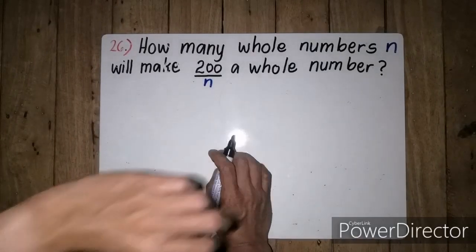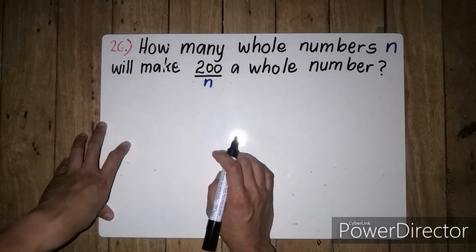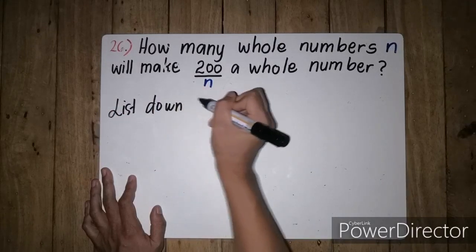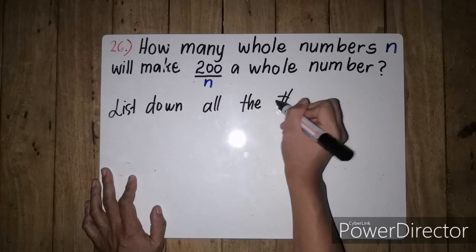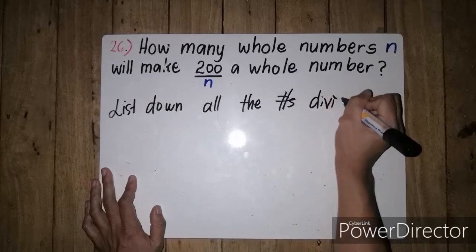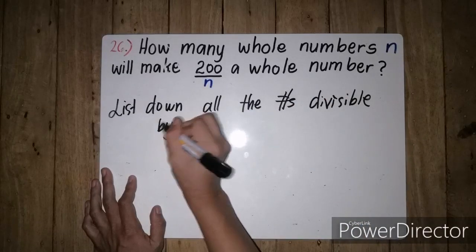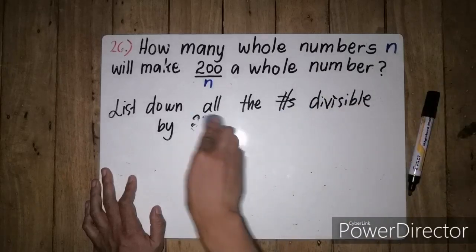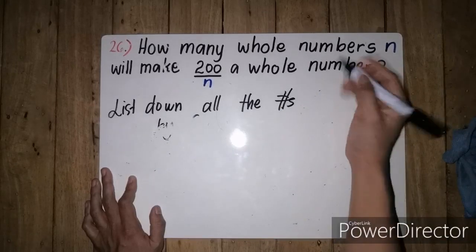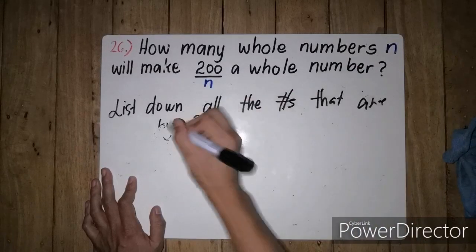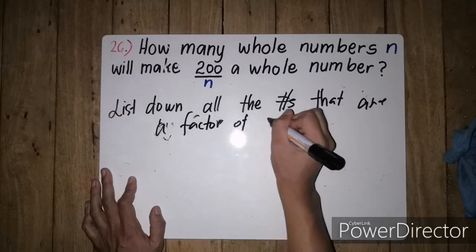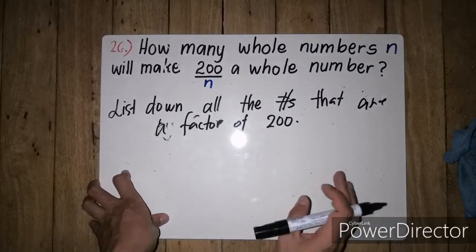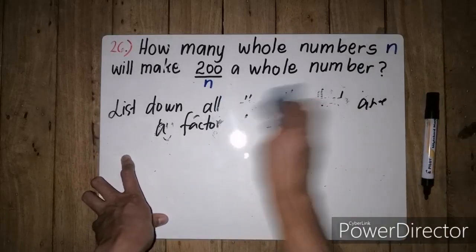So para masagotan natin itong problem na ito, we have to list down all the numbers that are a factor of 200. Pag sinabi natin yung factor ni 200, kapag dinivide natin yung 200 sa mga numbers na yun, dapat wala siyang magiging remainder. So let's start listing all the numbers.